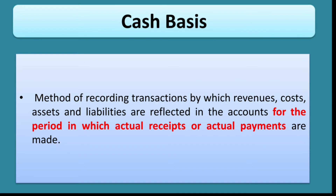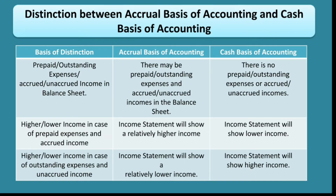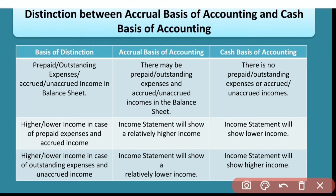Now the differentiation between the two — accrual basis and cash basis. The first difference relates to prepaid expenses, outstanding expenses, accrued income, and unaccrued income — whether they are of the current year or not. In accrual basis, we have to make adjustments for these. But for the cash basis, no such adjustment is required, because we are only concerned with cash receipts and cash payments.